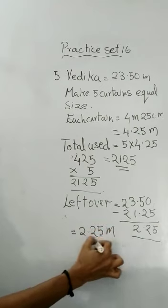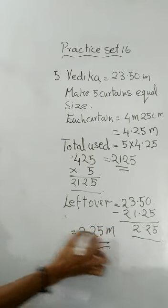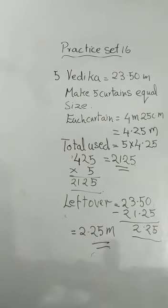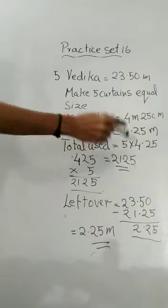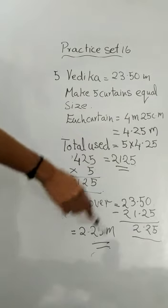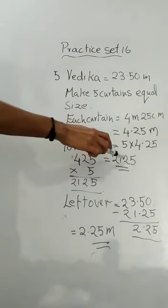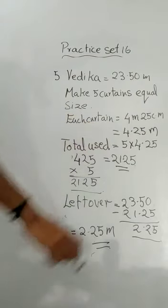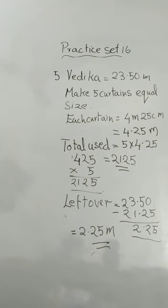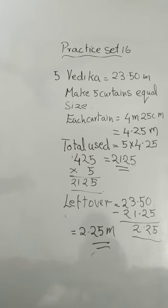So 2.25 metres of cloth will be left over. In this problem we did multiplication of decimal fractions and subtraction of decimal fractions. With this, the multiplication of decimal fractions chapter is done. We'll learn the next topic tomorrow — bye children!